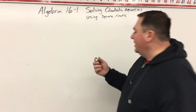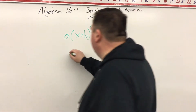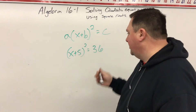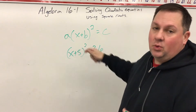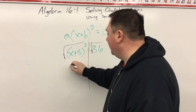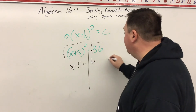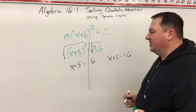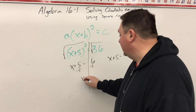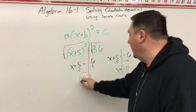We have the form a times (x + b)² equals c. For example, we have (x + 5)² equals 36. The first thing we must do is get rid of that square by taking the square root of both sides. We're left with x + 5 equals, and remember this 36 turns into two different numbers, so x + 5 equals 6 and x + 5 equals negative 6. You will have two answers to almost every one of these problems. Solving for x: subtract 5 from both sides to get x equals 1, and subtracting 5 from the other gives x equals negative 11. So x equals 1 and negative 11.